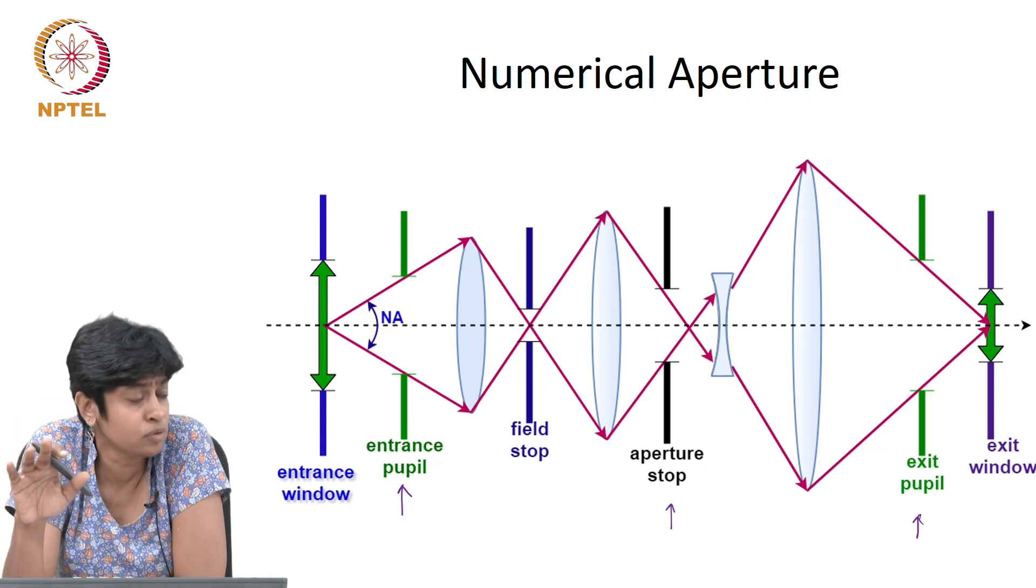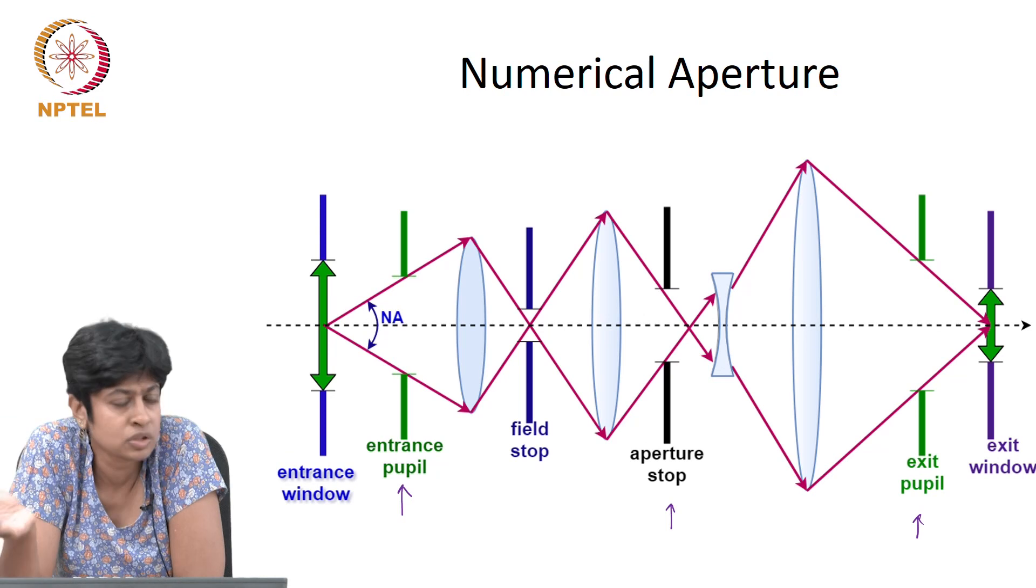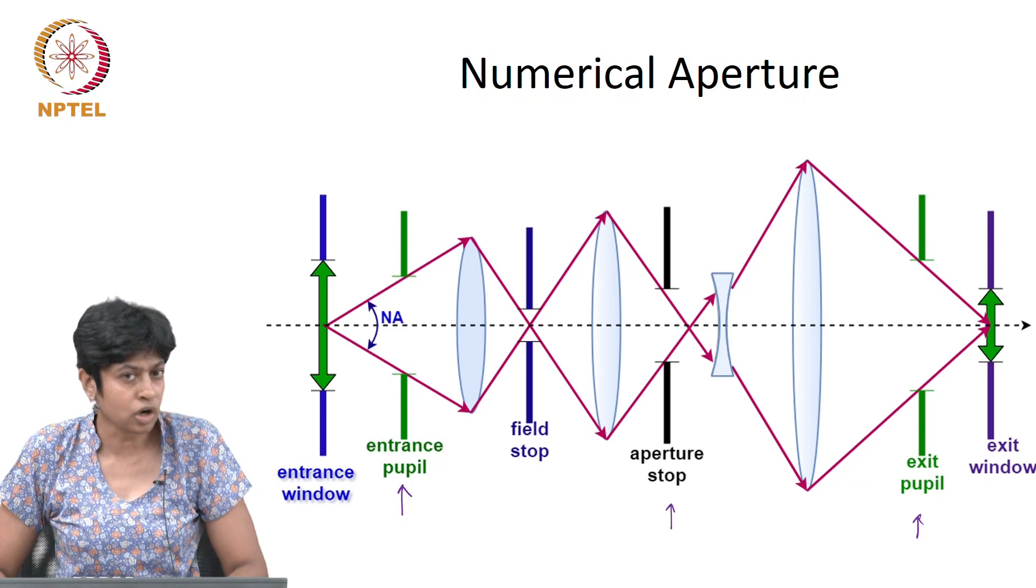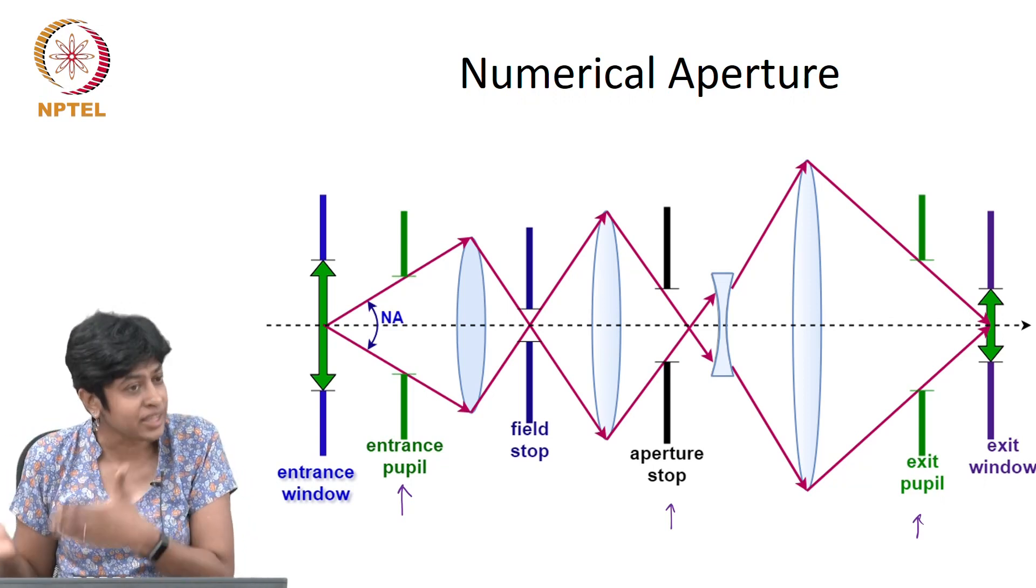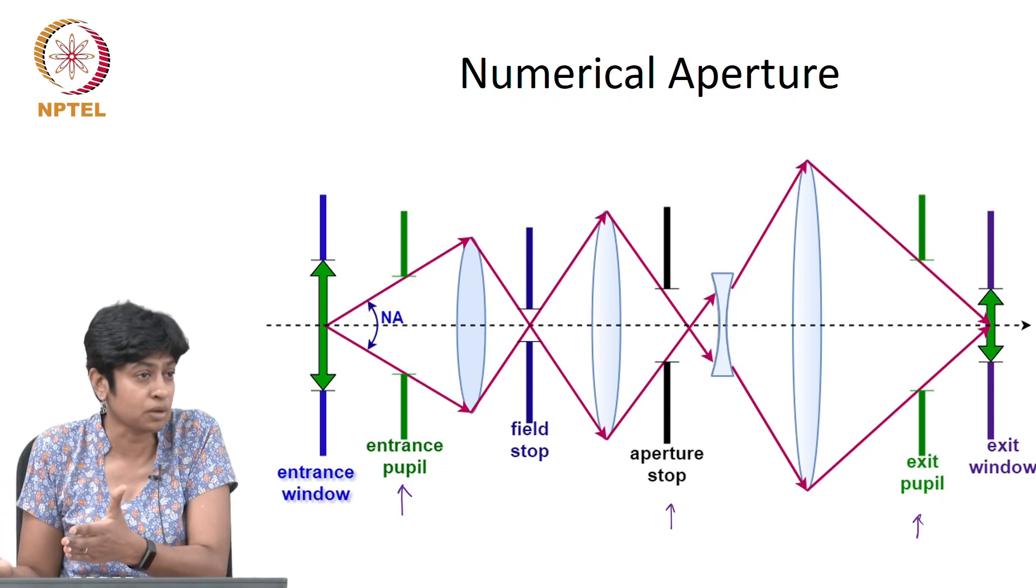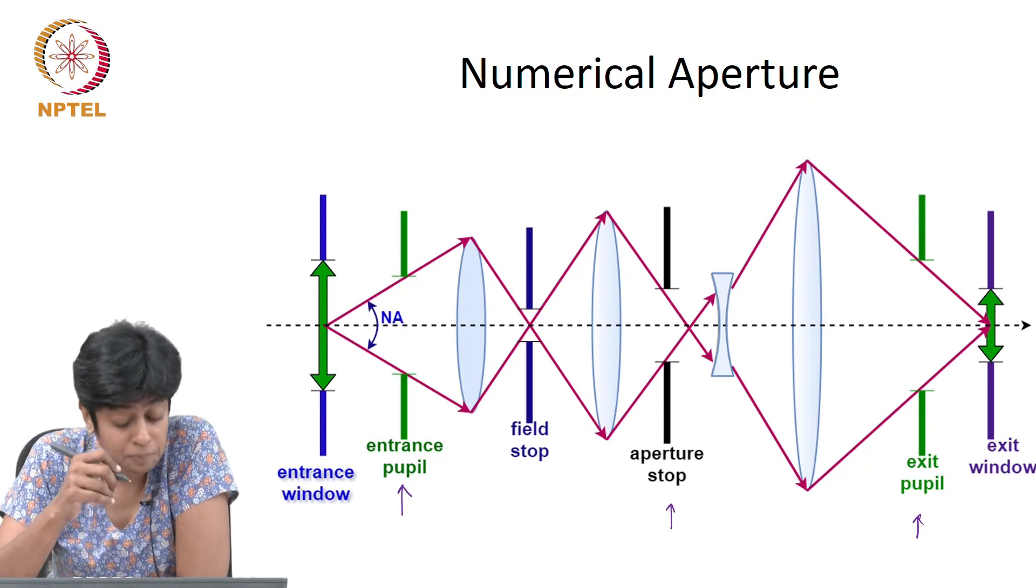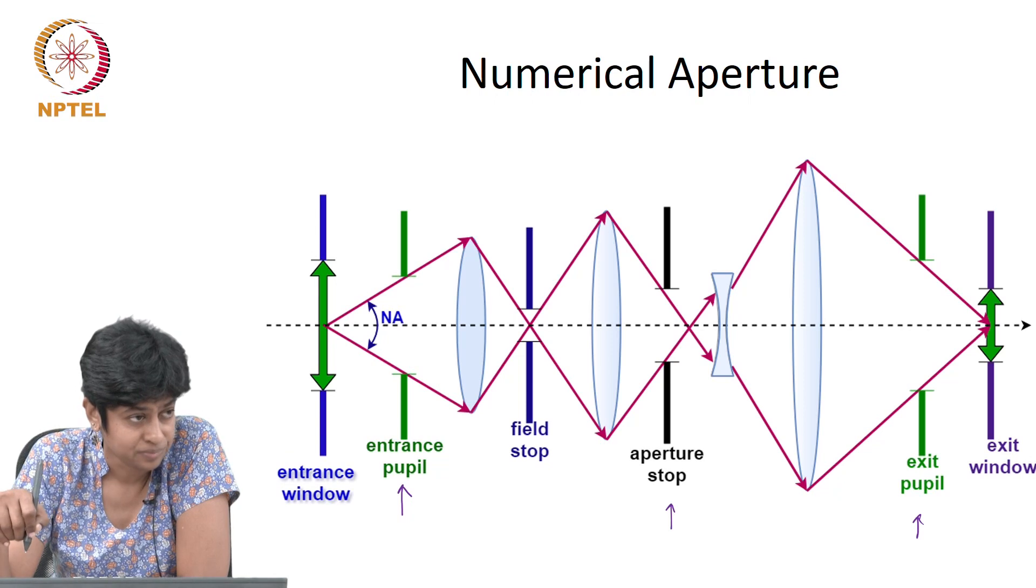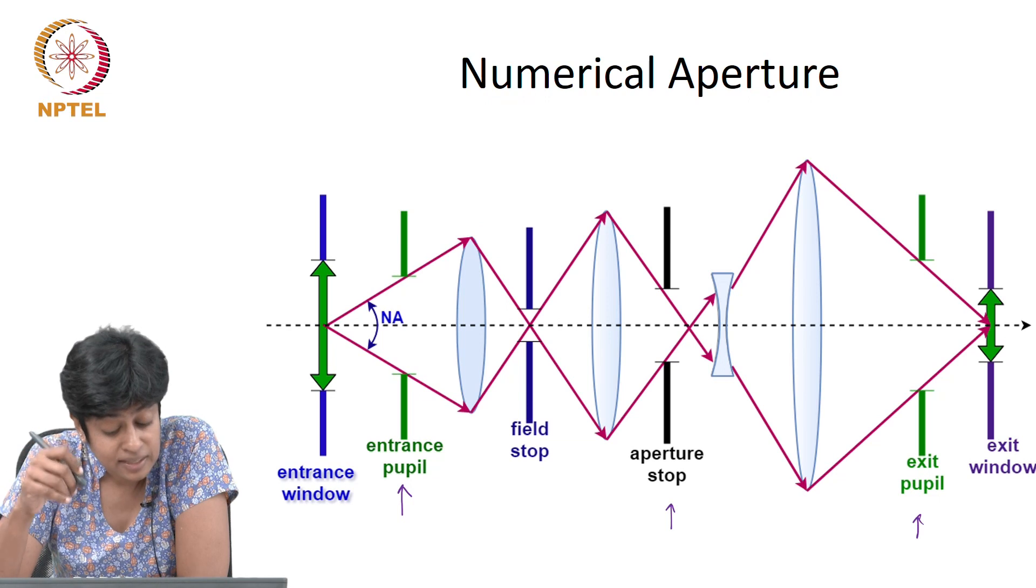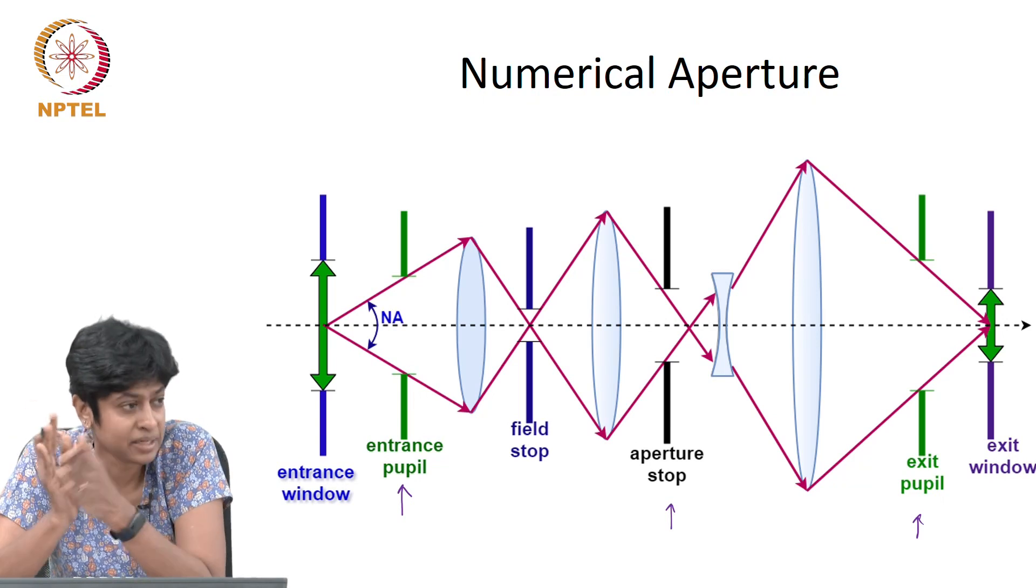The extremities that fall outside are not captured, and therefore the size of that detector becomes your field. That element, that is your field stop, it is limiting the field. So that field stop could actually occur anywhere in your system. It says what are the rays that make it through to form the edges of my object, or my image rather.